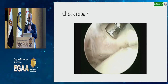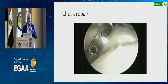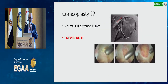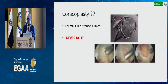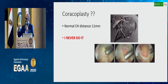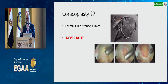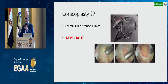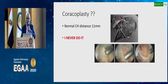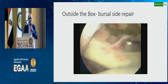The most important step is to clear up the rotator interval and the lateral footprint. Regarding coracoplasty: our colleagues in North America do it quite often because they feel the coracohumeral distance — generally about 11 millimeters — is reduced in these cases. I personally do not do it. I feel that when the subscap is torn the humeral head subluxes anteriorly, reducing the space, but once the subscap is repaired this space returns to normal.